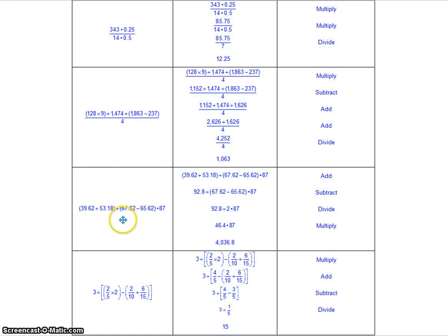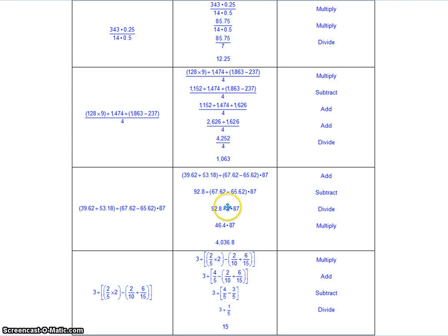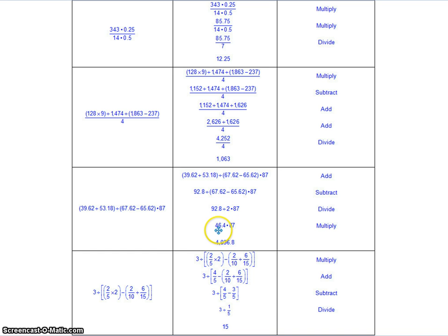This one has two sets of parentheses with something happening in both, so we do them from left to right. Start with the addition in this one to get 92.8, then do the subtraction to get 2. Then we have division and multiplication, so again left to right — divide first: 92.8 divided by 2, then multiply times 87, and we get 4,036.8.